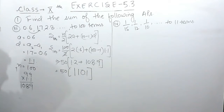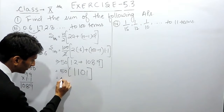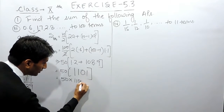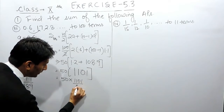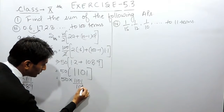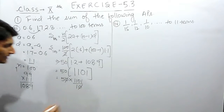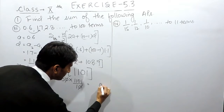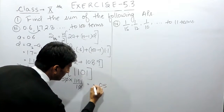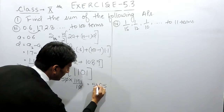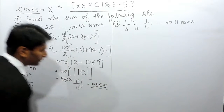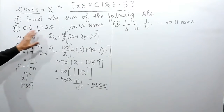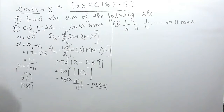Now this can be solved as 50 multiplied by 1.2 plus 108.9. Adding: 9 plus 2 is 11 carry 1, 8 plus 1 is 9 plus carry is 10, carry 1, giving 110.1. So this becomes 50 multiplied by 1101 upon 10. Cancelling the zero, 5 multiplied by 1101 gives 5505. So 5505 is the sum of this series till 100 terms.